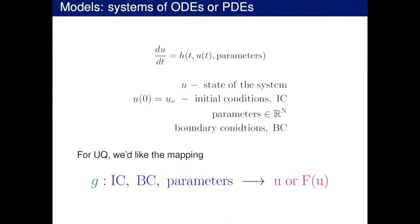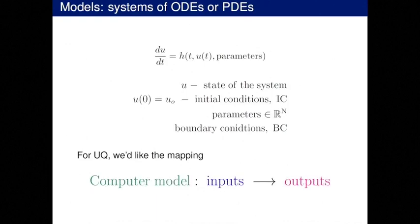Our models — I'm typically thinking of some kind of dynamical system. I have a state U and some right-hand side of this equation. I might have spatial differential operators. Typically we have initial conditions, boundary conditions, and parameters. For UQ, what we're looking for is this mapping. We'd like to exercise the computer model instantly, but instead it takes hours, minutes, days, or months. So we want some mapping from initial conditions, boundary conditions, and parameters to the model solution — the state, or some functional of the state.